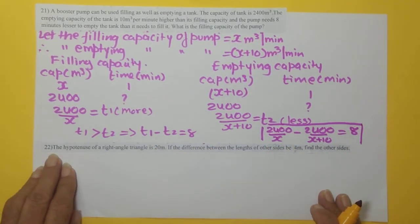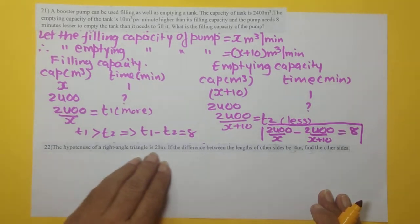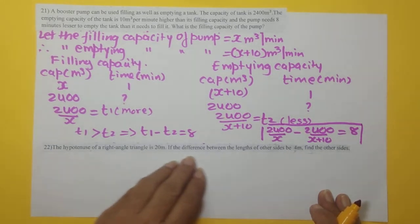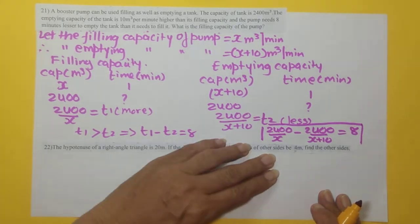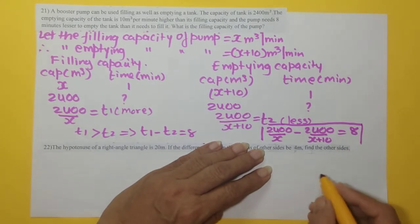Now let us take the next sum. That is question number 22. The hypotenuse of a right angle triangle is 20 meters. If the difference between the length of other sides is 4, find the other sides.